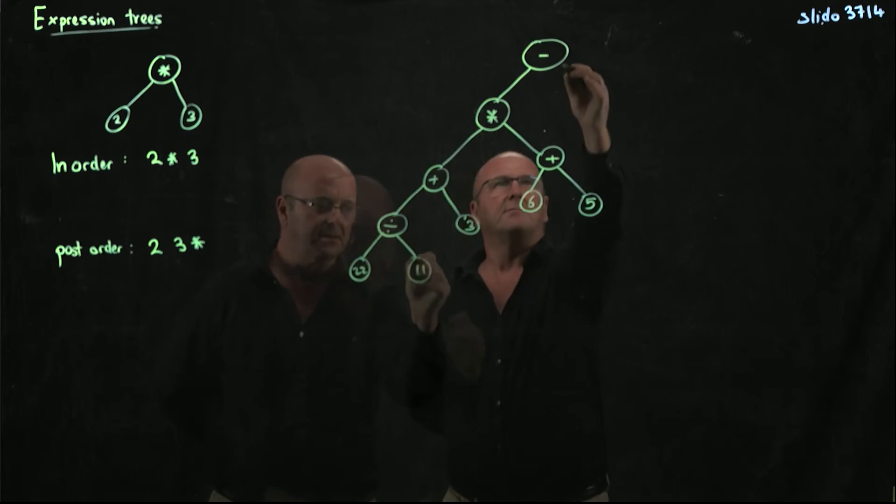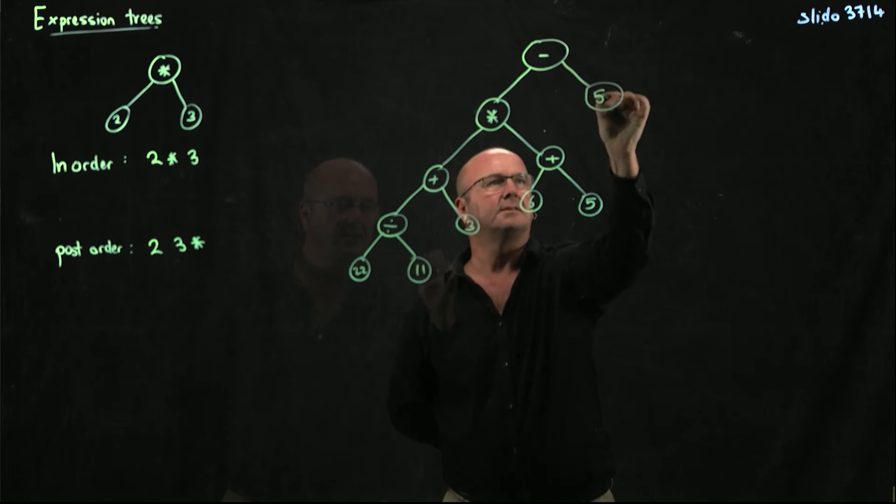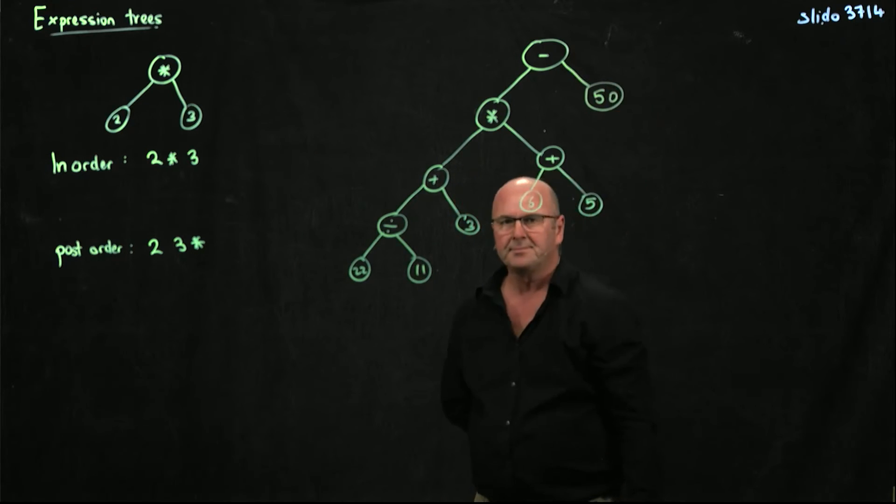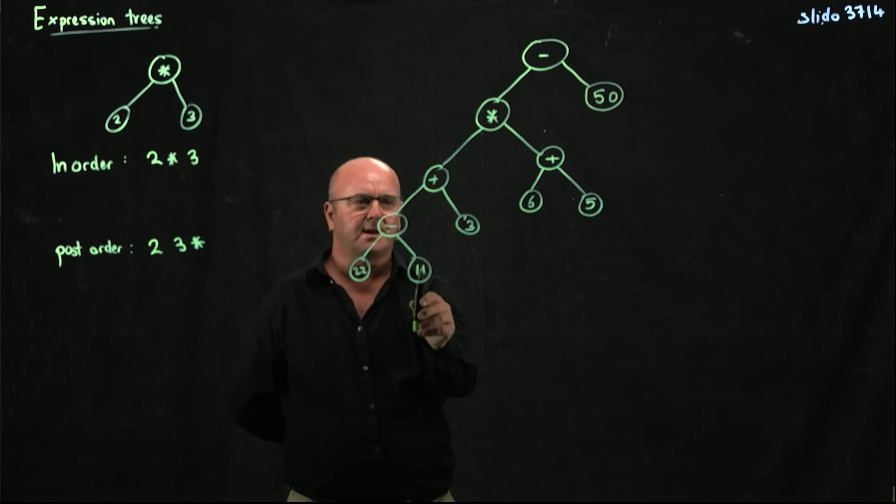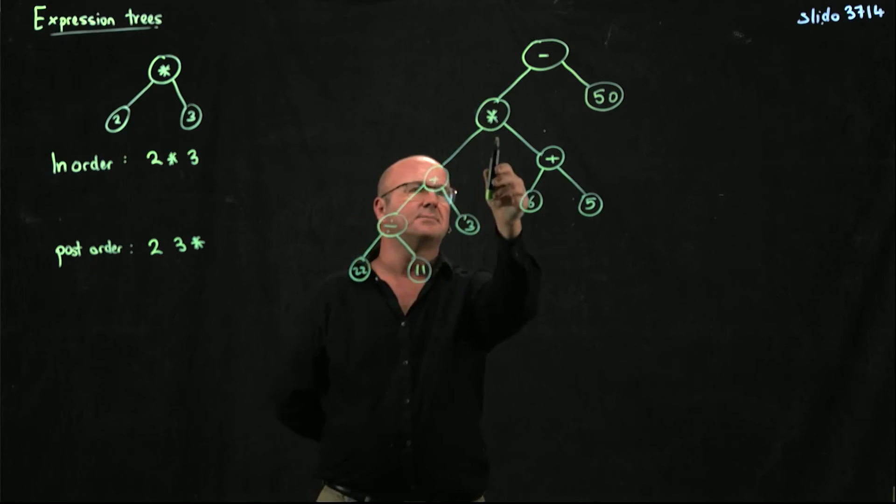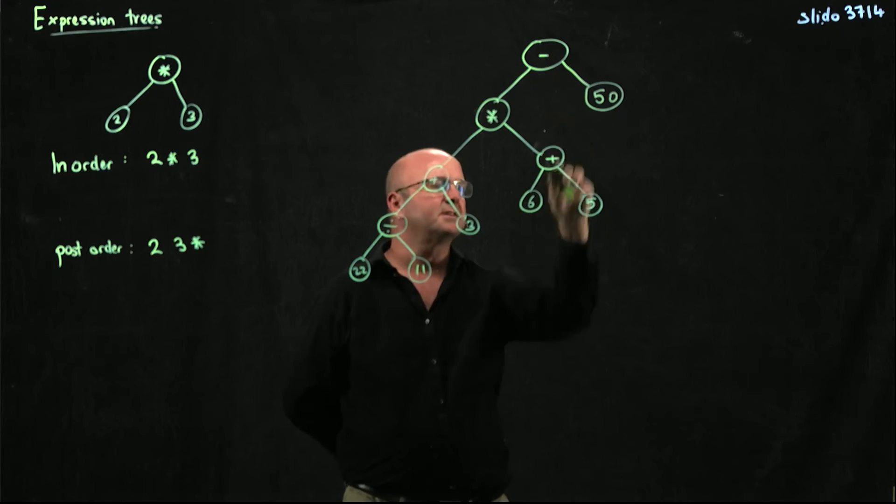So, oh, and I've lost one. Let's take a 50 off. So we've got 22 divided by 11 plus a 3 times plus a 6 and a 5 minus a 50.